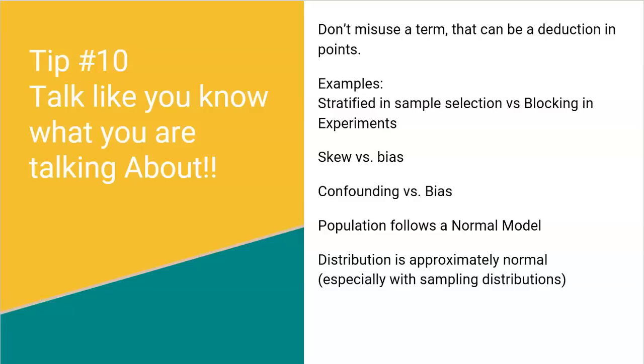Talk like you know what you're talking about. Don't misuse terms. They can actually take points off if you misuse a term. For example, stratified is the term we use when we're selecting samples, where blocking is very much like stratified, but that is what we do in experiments. A lot of times kids will say that something's biased, they'll say that's skewed. No, skewed is the shape of a quantitative distribution graph. Bias is when your question or your wording of your problem or something that you do could lead to answers that don't reflect the truth. So don't misuse terms.